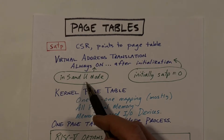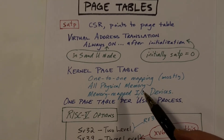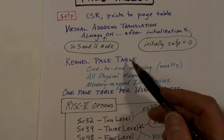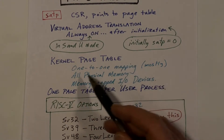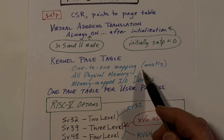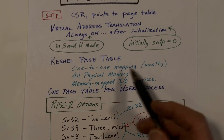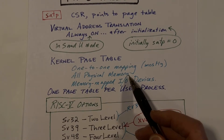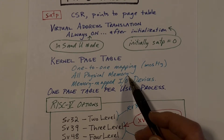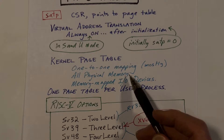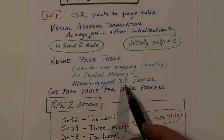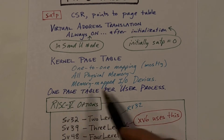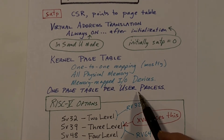Translation is always turned on when running in supervisor and user mode; it's not turned on in machine mode. There are several page tables: there is one page table for the kernel, and all cores will share that page table. It provides a mostly one-to-one mapping — with a couple of exceptions — mapping all of physical memory so kernel code can access any location without computing the address. Memory-mapped IO devices are also mapped directly. In addition, there is a single page table for every user mode process.